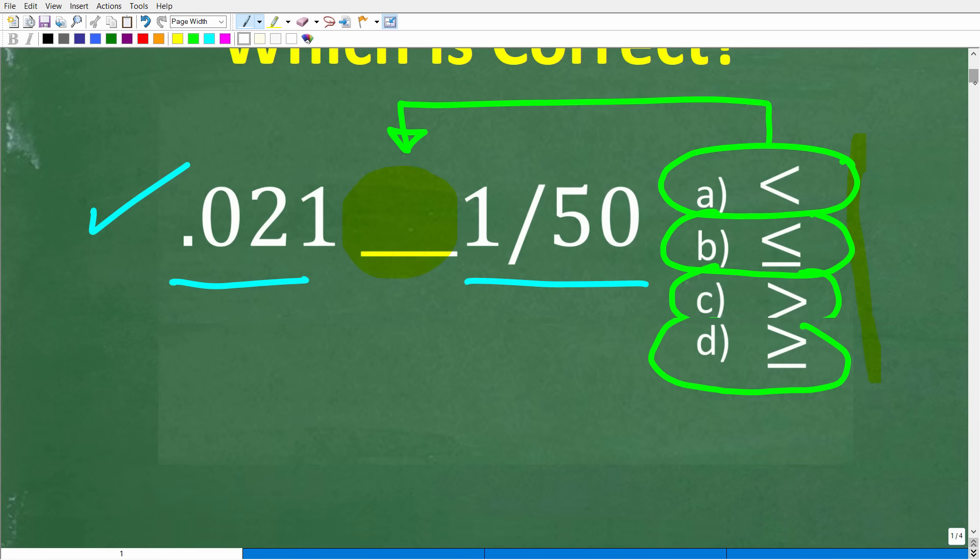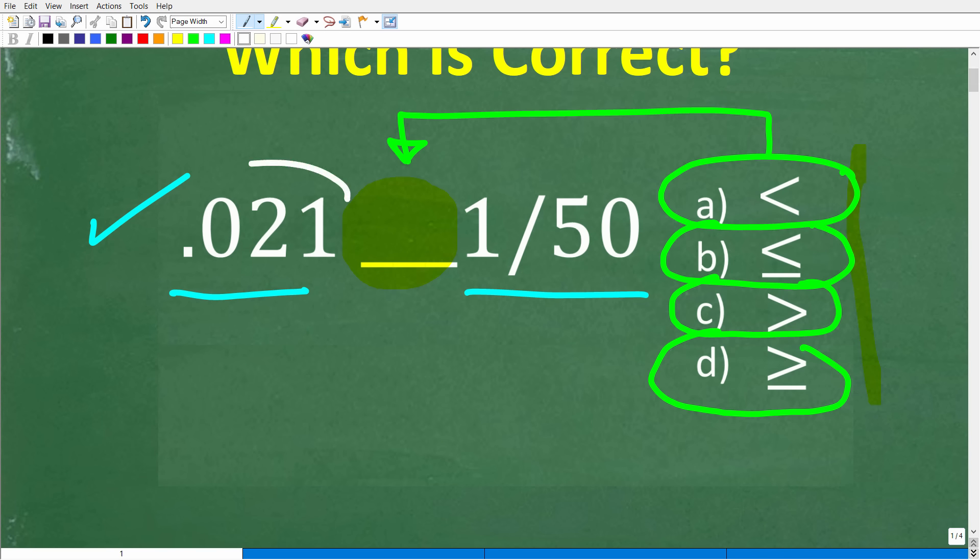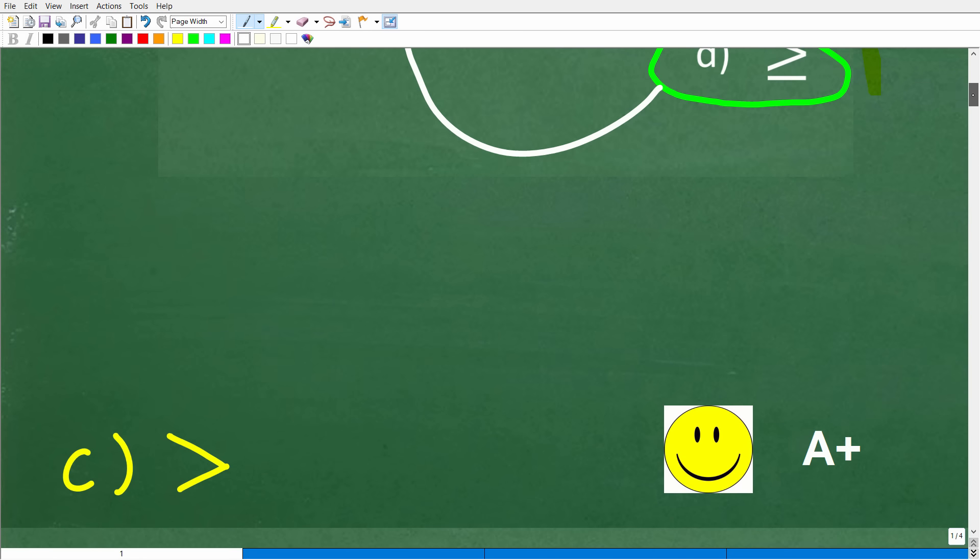So once again, we are making a comparison here. We have 0.021 and 1 over 50, and we want to put one of these symbols right here. So which one would work? Well, actually, the best answer here is C, and that is greater than.